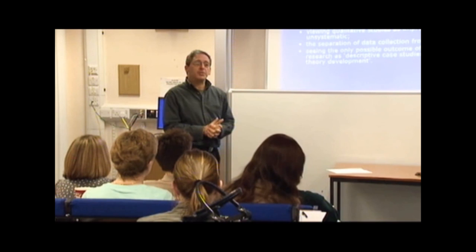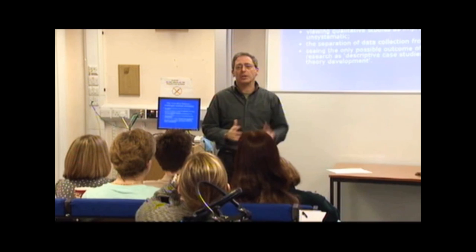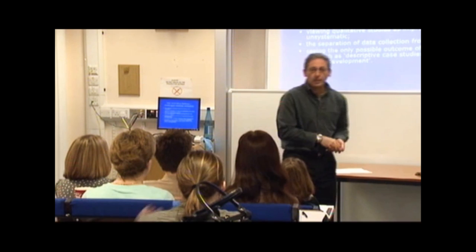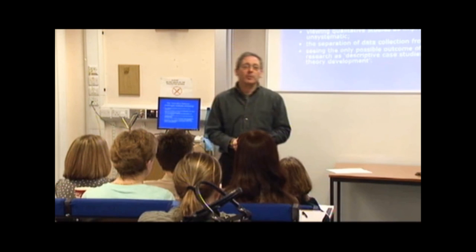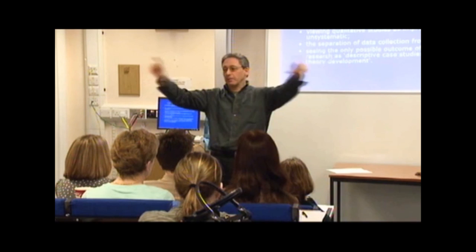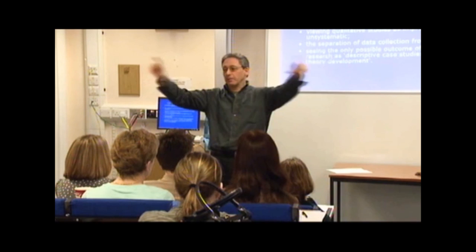Glasser and Strauss, when they were writing in the 60s from the perspective of American sociology, said that what most research and graduate students in America were doing was — Glasser came out with a wonderful phrase — they were research proletarians to the theoretical capitalists. So you have the grand theories: Marx, Weber, Durkheim, Parsons, Merton — people like that — who had these big theories.